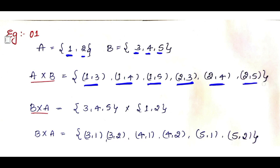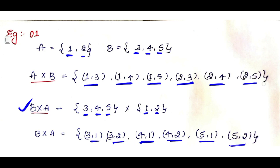In the same way, if you want to calculate B cross A, you write set B = {3,4,5} cross {1,2}. Take the first element 3 from set B and pair with all elements of set A: ordered pairs (3,1), (3,2). Then take element 4: ordered pairs (4,1), (4,2). Then take element 5: ordered pairs (5,1), (5,2). In this way we calculate A cross B and B cross A.